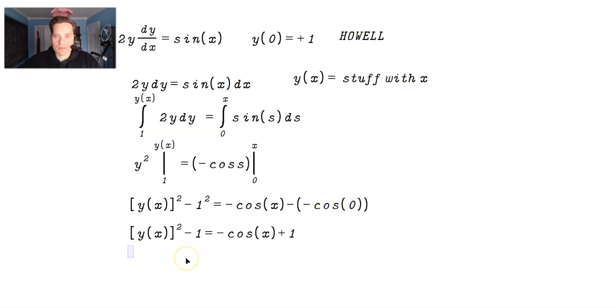Now you take the -1, you move it to the right side, so you're going to have [y(x)]^2 = -cos(x) + 2. Let's finish this up here. Now you have to take square roots, and you have to remember that this condition states that when x = 0, y = 1.